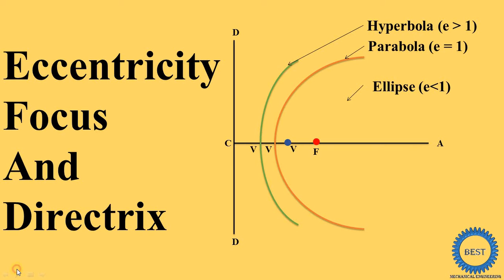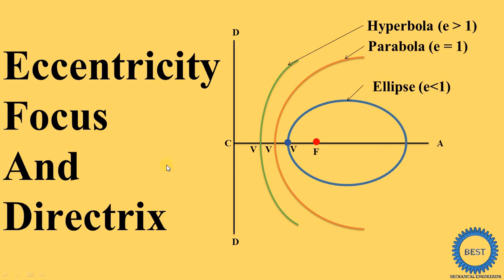In this video I explain what is eccentricity, focus, directrix, and a few other basic terms. First we understand the basic terms like focus, directrix, vertex, and axis. Then we understand the definition of eccentricity and find out the value of eccentricity for ellipse, parabola, and hyperbola.